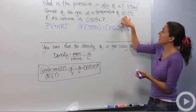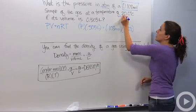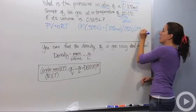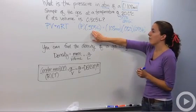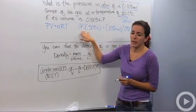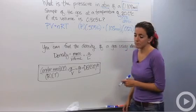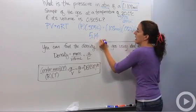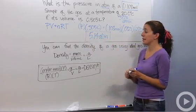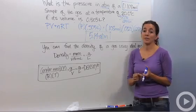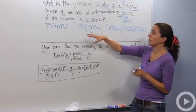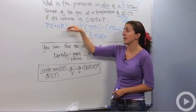And then our temperature is 20 degrees Celsius. Don't forget we always want things in Kelvin. So we're going to add 273 to make it 293 Kelvin. So if we multiply all these together and divide by 0.505 to isolate our pressure value, we're going to get 5.14 atmospheres. So we just found out using the ideal gas law that our pressure in this scenario is 5.14 atmospheres.